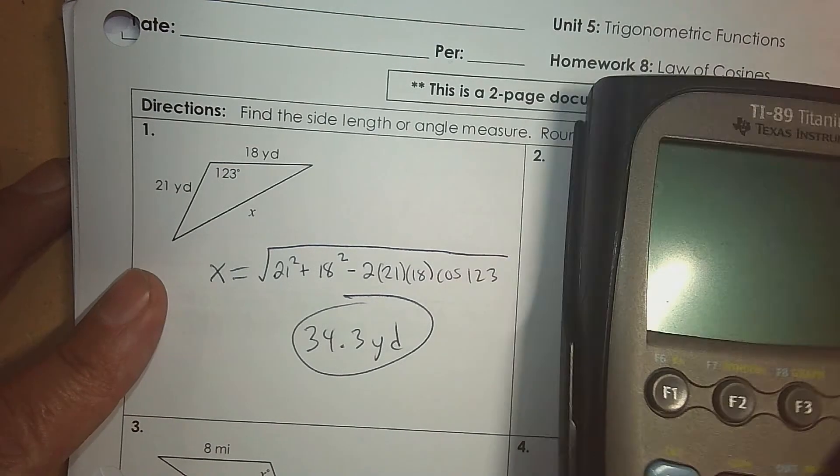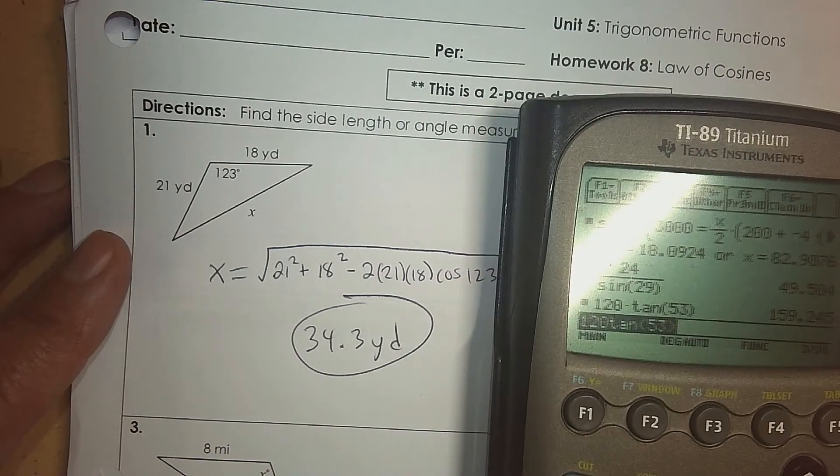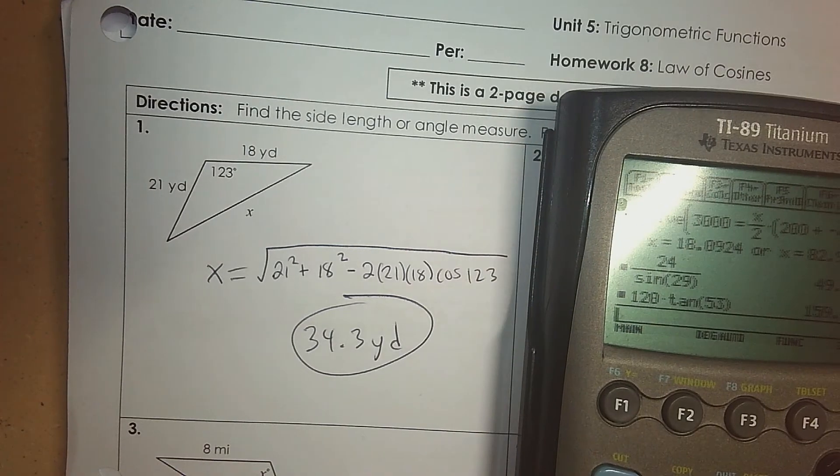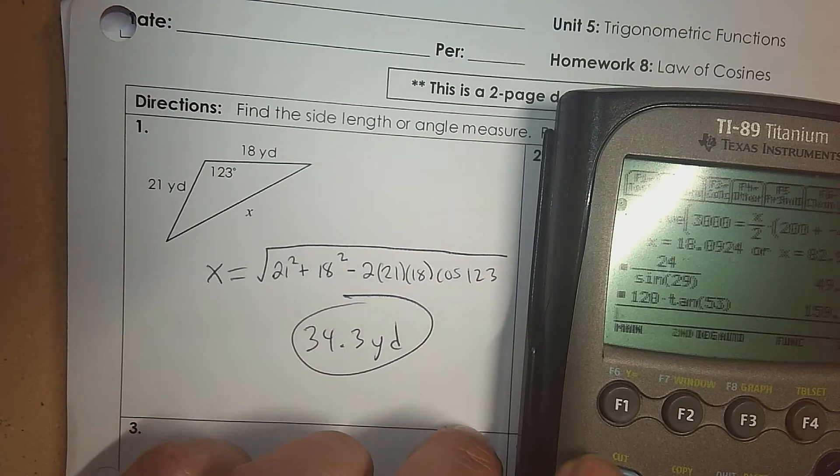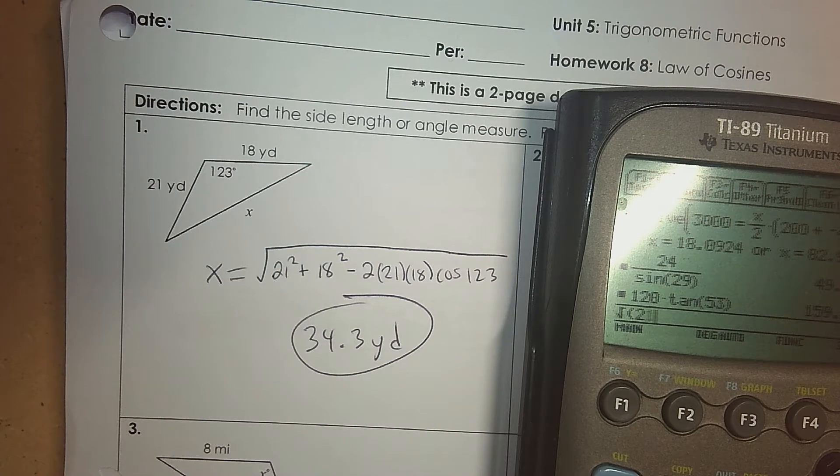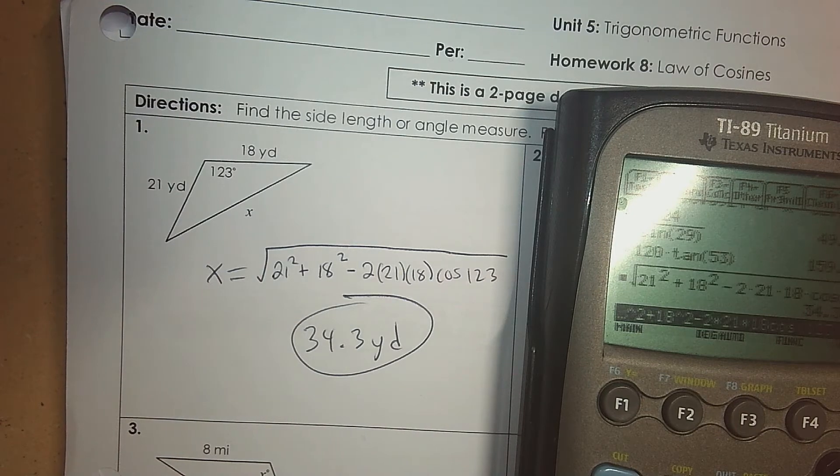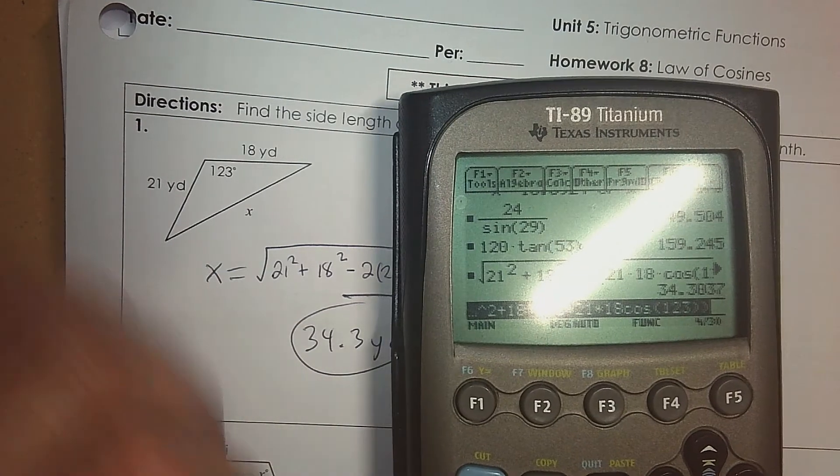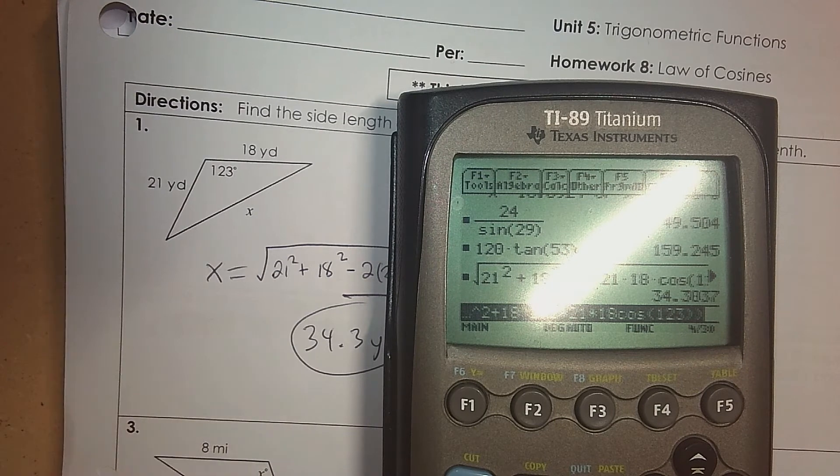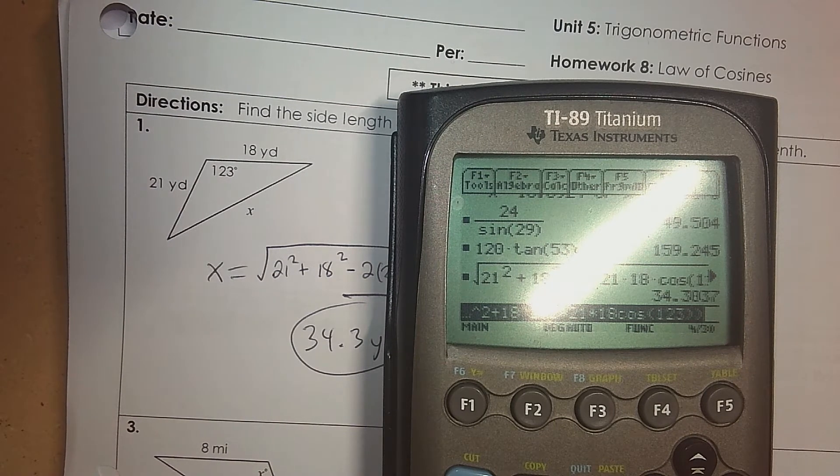Here, I'll do this once for you on the calculator so you can see the type in part. Square root, 21 squared plus 18 squared, subtract 2 times 21 times 18 and the cosine of 1, 2, 3. Close it, close it. There, make sure you close it for 123 and then close it again for the whole thing. Then you get 34.3.